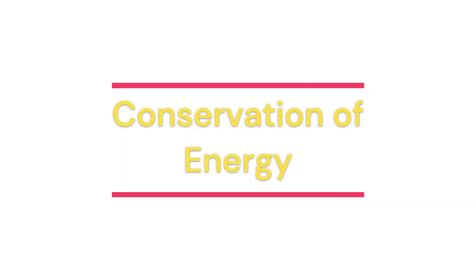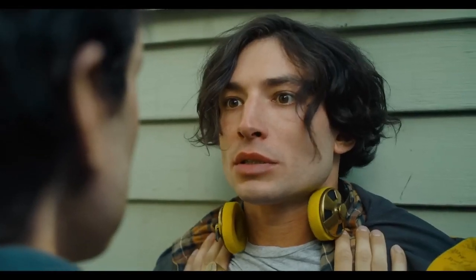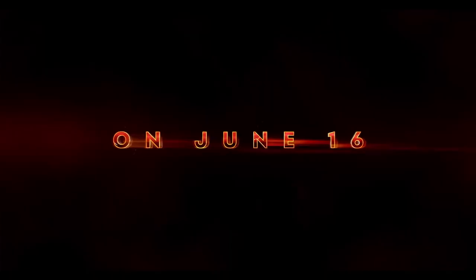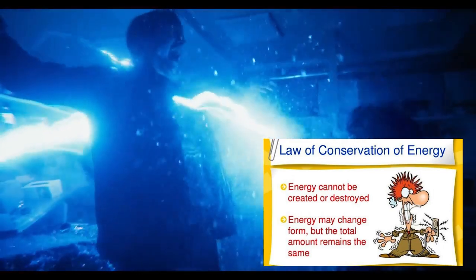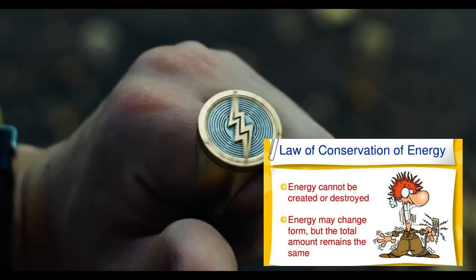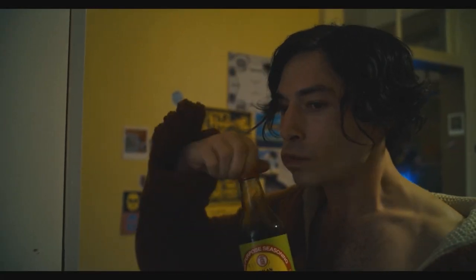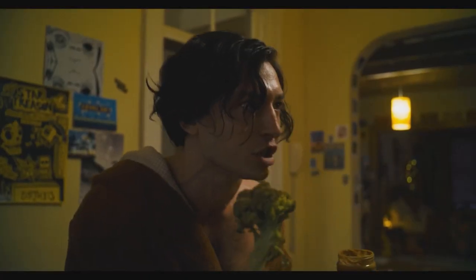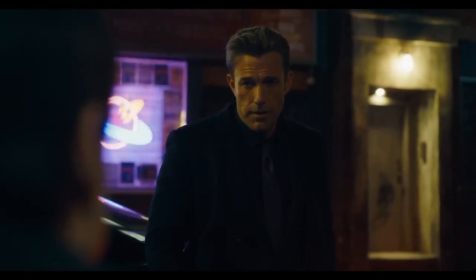Now let's talk about the Flash's amazing stamina. Maintaining super speed requires a tremendous amount of energy. However, this introduces a problem known as the conservation of energy. According to the law of conservation of energy, energy cannot be created or destroyed — it can only change forms. To sustain his powers, the Flash must acquire energy from an external source, converting it into the kinetic energy that propels him to extraordinary speeds. This is why he needs so much energy from food constantly to build up that energy. Understanding the concept of energy conversion is crucial in appreciating the physics behind his actions.